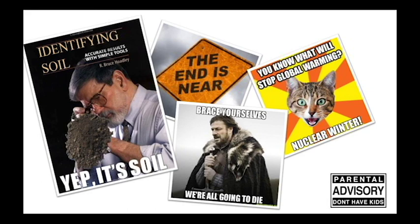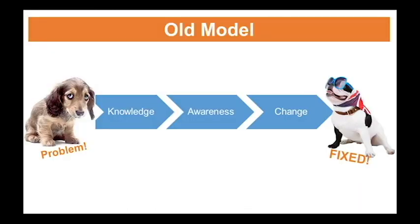My class became known as the course about soil and 'don't have children because they're just going to starve to death.' This is a problem because a lot of behavior change thinking rests on an old model: give people knowledge, they become aware of the problem, that promotes them to change behavior, and voilà, the problem is fixed. But we actually need a new model.